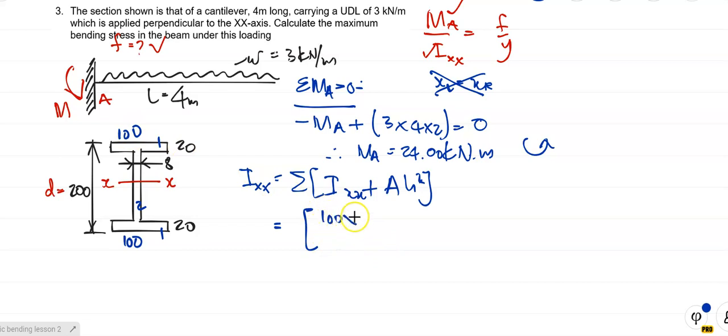So it's 100 times 20 cubed over 12 plus the area. What's the area? Area is 100 times 20, which is 2000. Which is 2000 times, what's H? H is the distance from the centroid. So H is the distance from the centroid down to the, which is how much? It is 100 minus 10. So it's times 90 squared. Did you get that? I'm going a bit fast here. Because this is just revision. The area is 100 times 20, which is 2000. And what's H? H is the distance from the centroid of the element to the centroid of the whole cross section. So from there to there is 100 minus 10, which is 90 squared. And there's two of them.